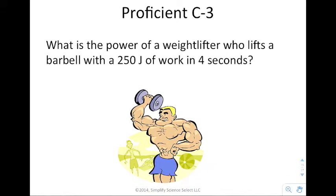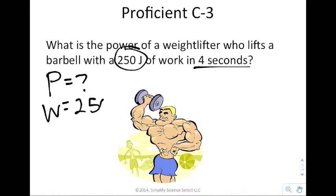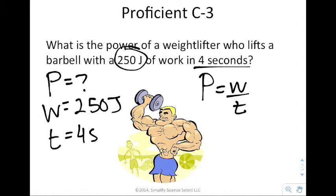What is the power of a weight lifter who lifts a barbell with 250 joules of work in four seconds? We're looking for the power. We know the work is 250 joules and the time is four seconds. We can say power equals work over time, or 250 divided by 4. You would take your calculator and 250 divided by 4 gives you power being 62.5 watts.